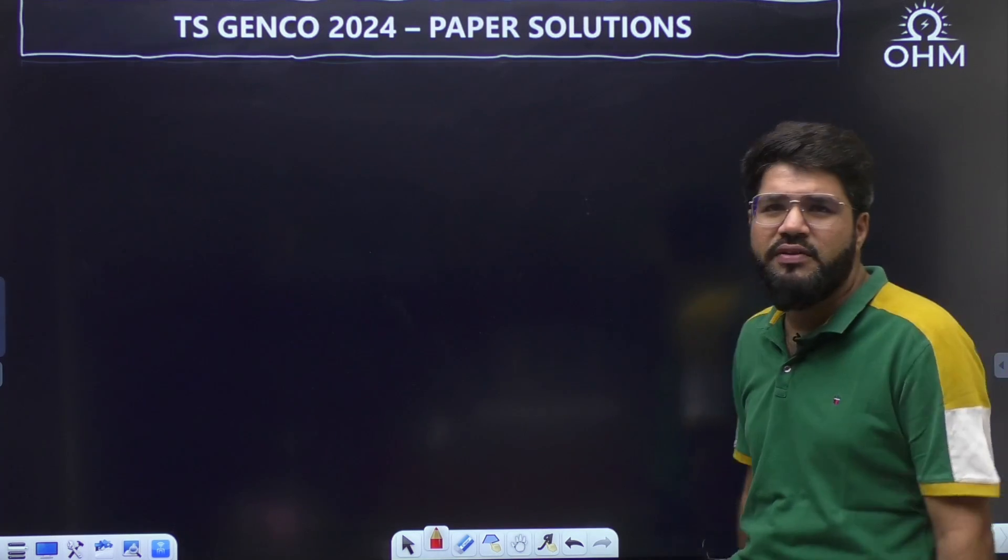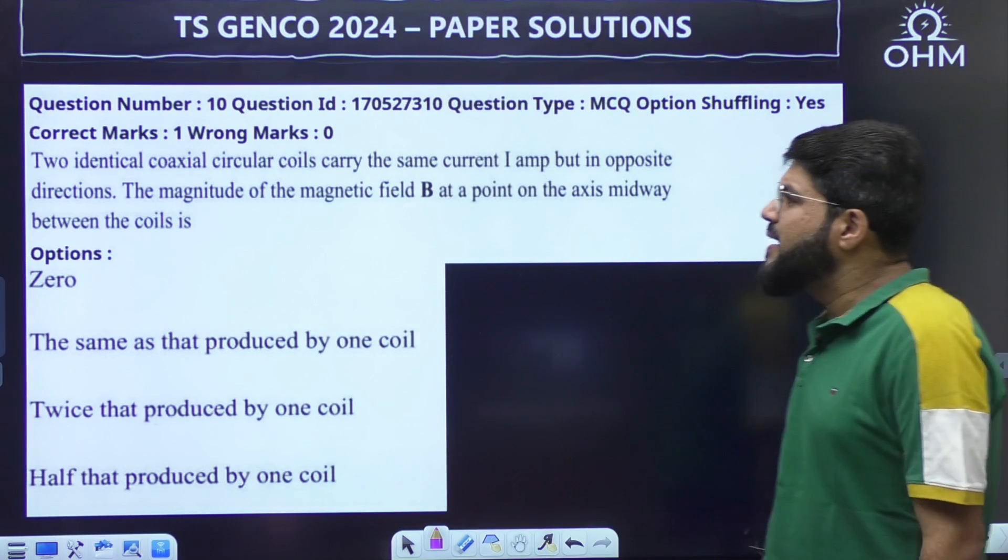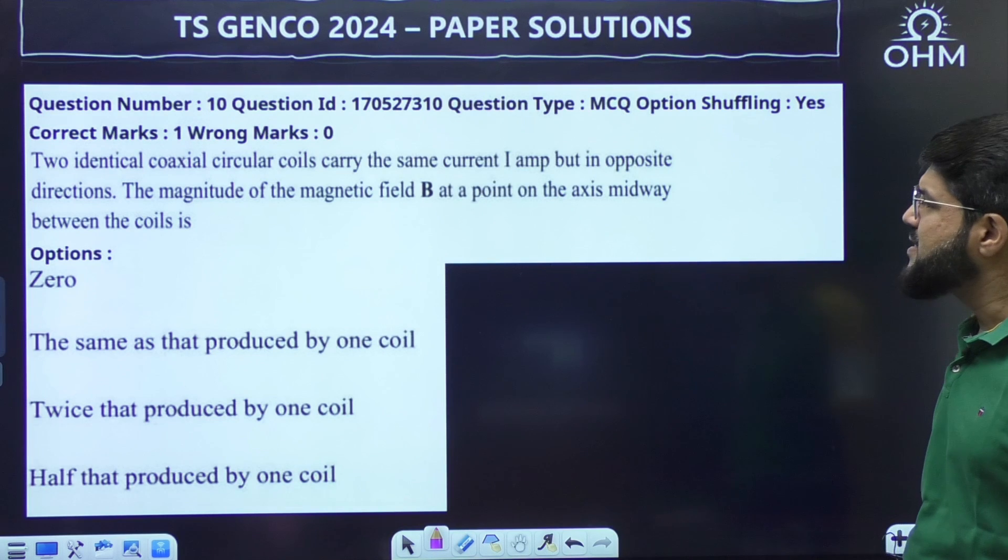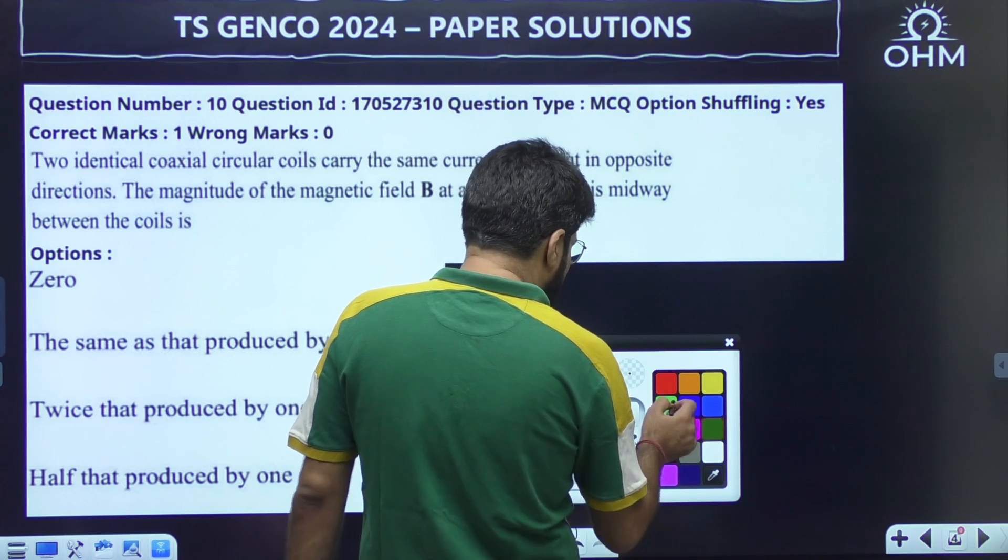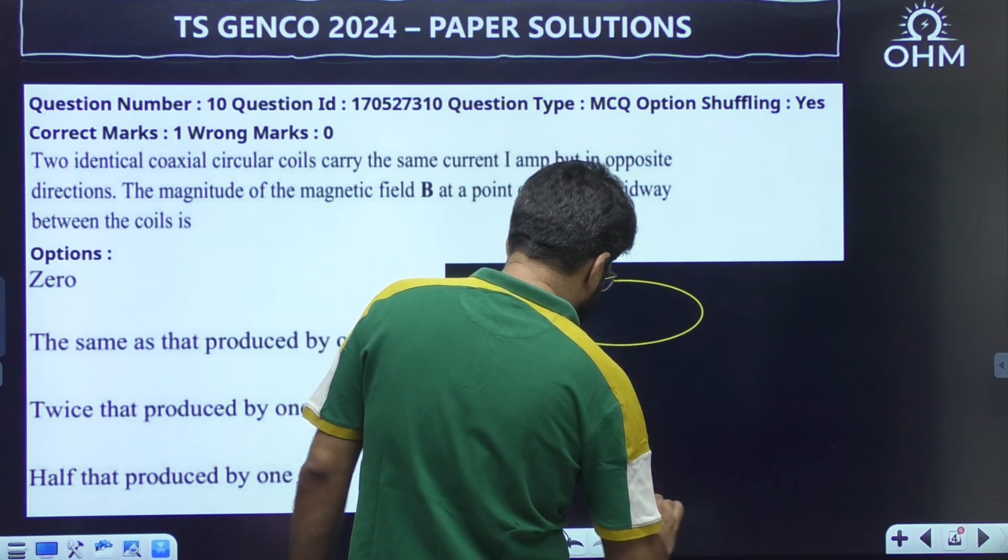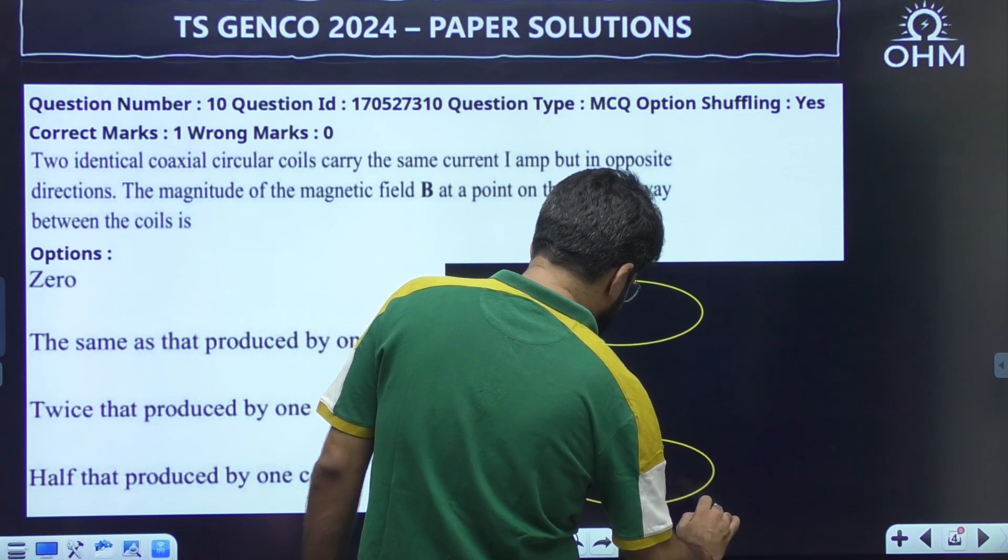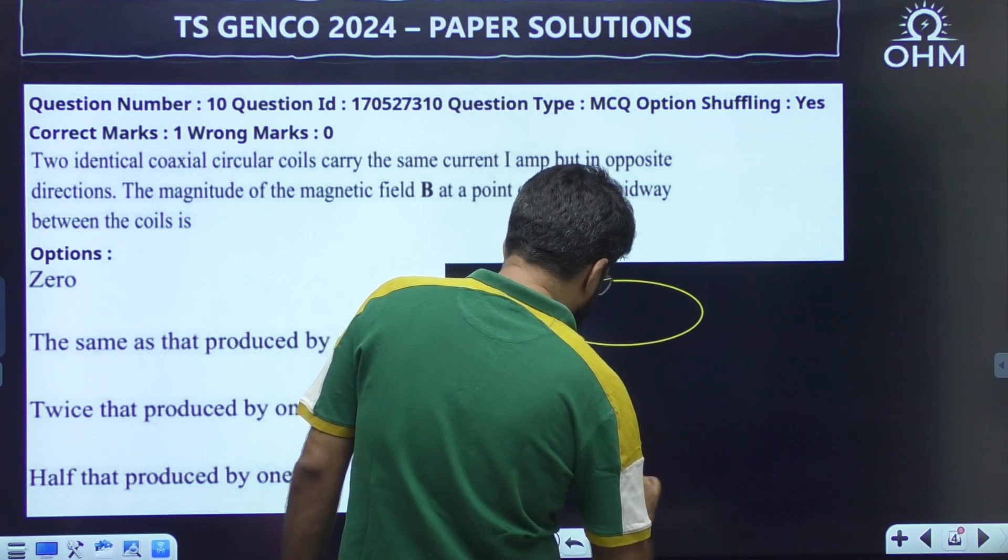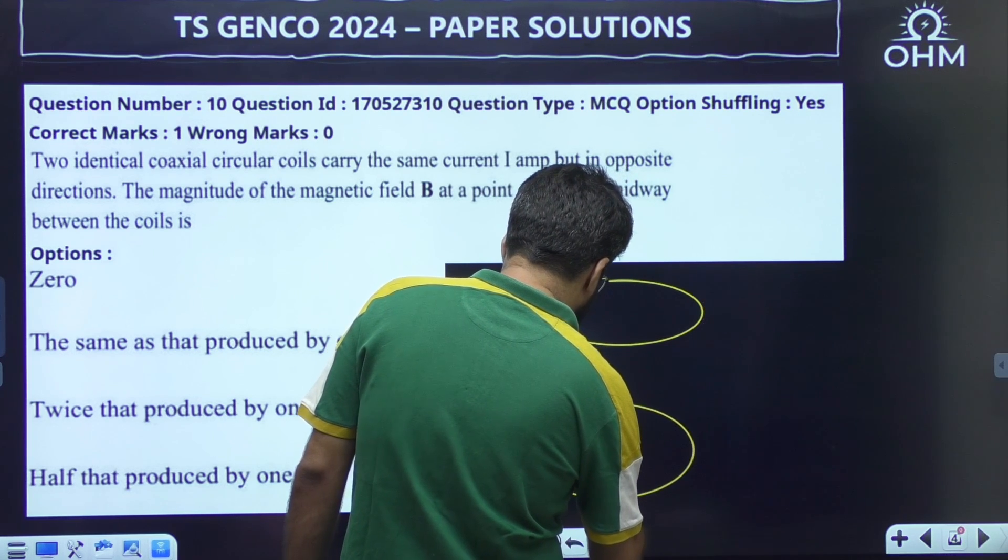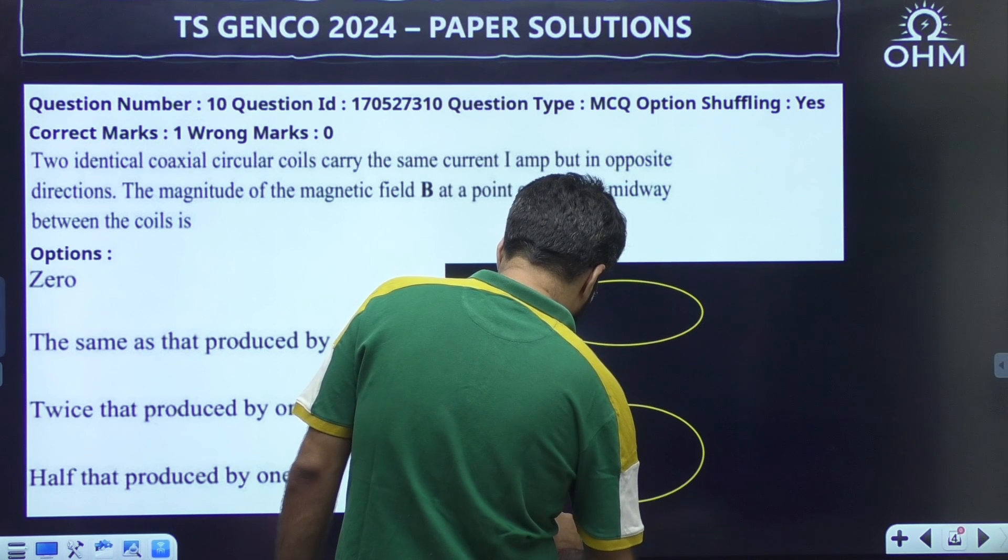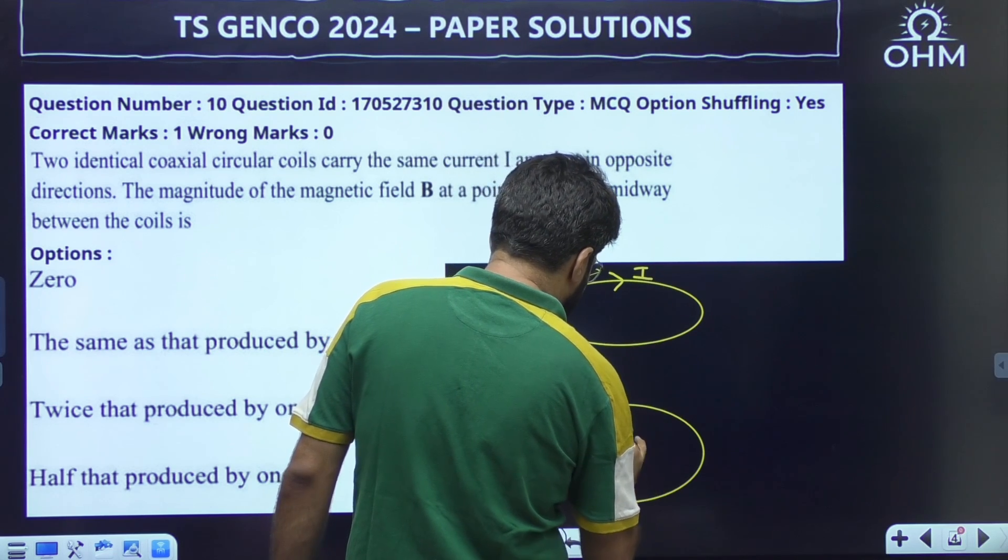Three questions from the EMF, mostly very basic questions. Let's go to this one. Two identical coaxial circular coils carry the same current I but in opposite directions. Identical, so I will assume them having the same radius and they also carry the equal current but in opposite directions. So if this is current in one direction, it is clockwise, another one can be taken as anti-clockwise.